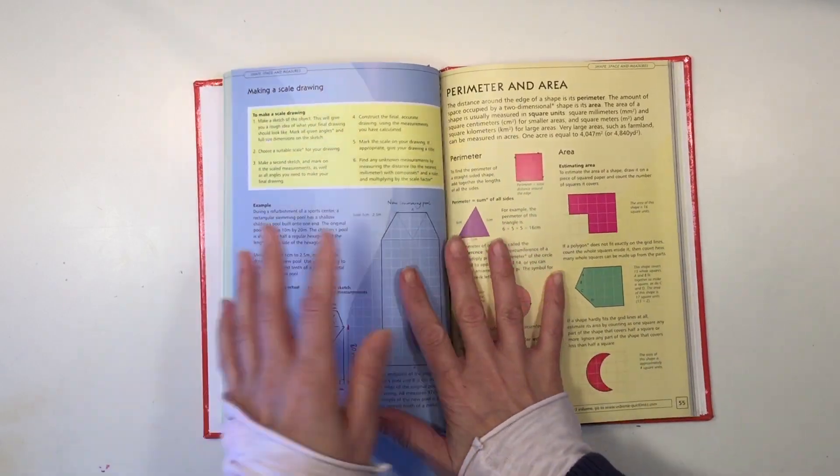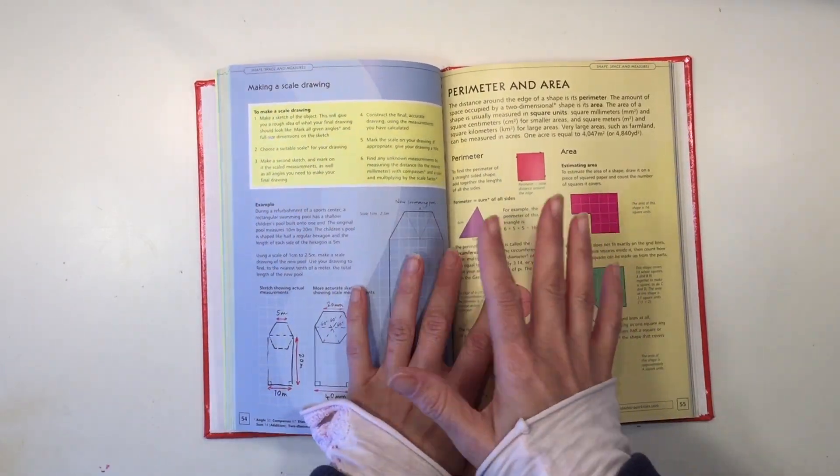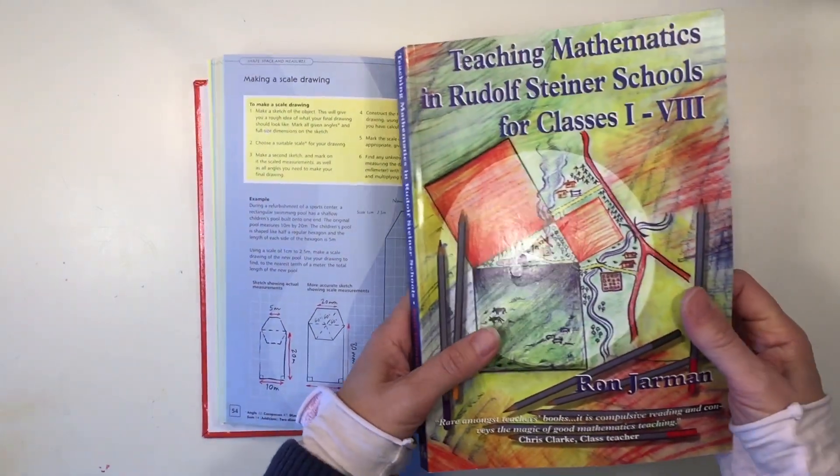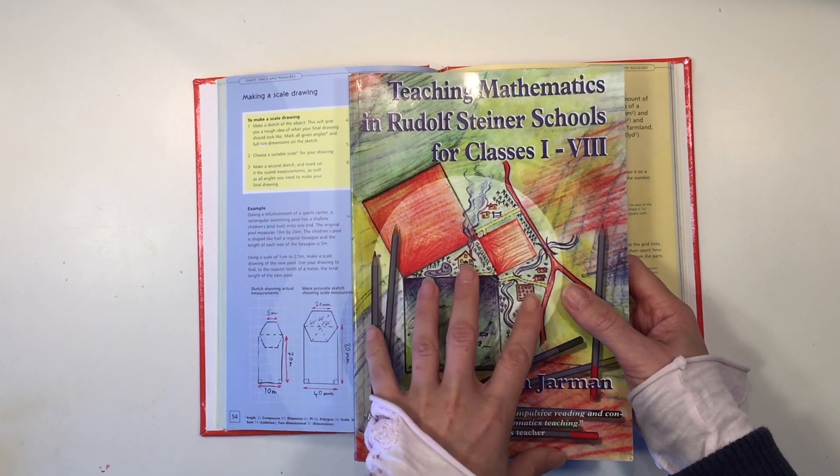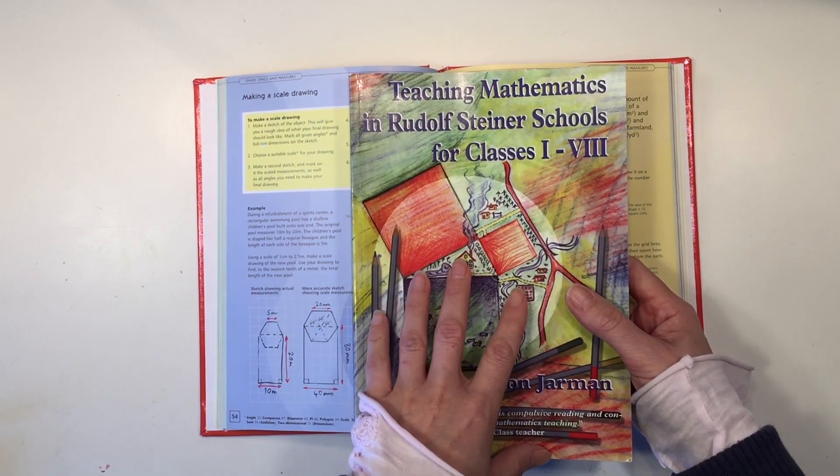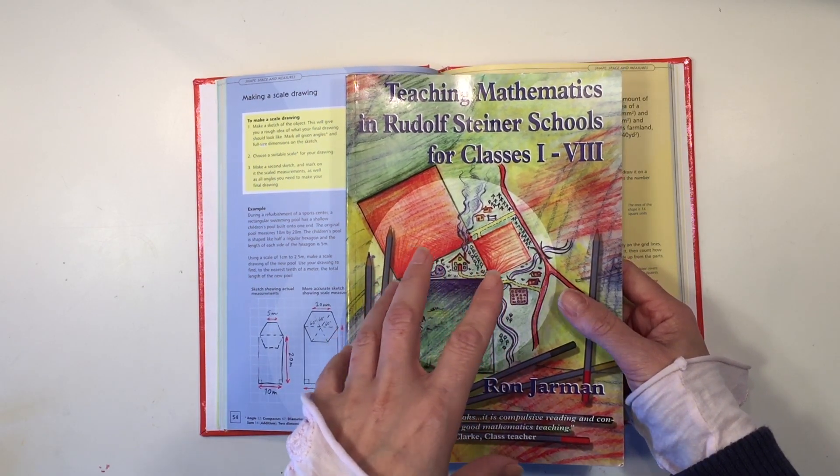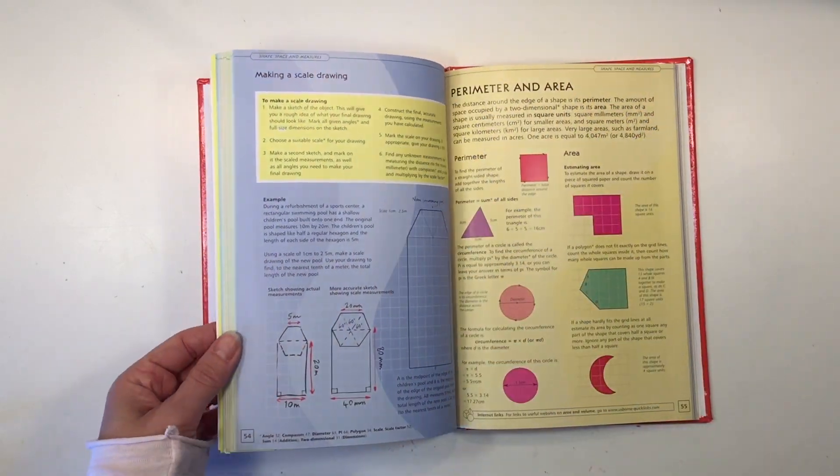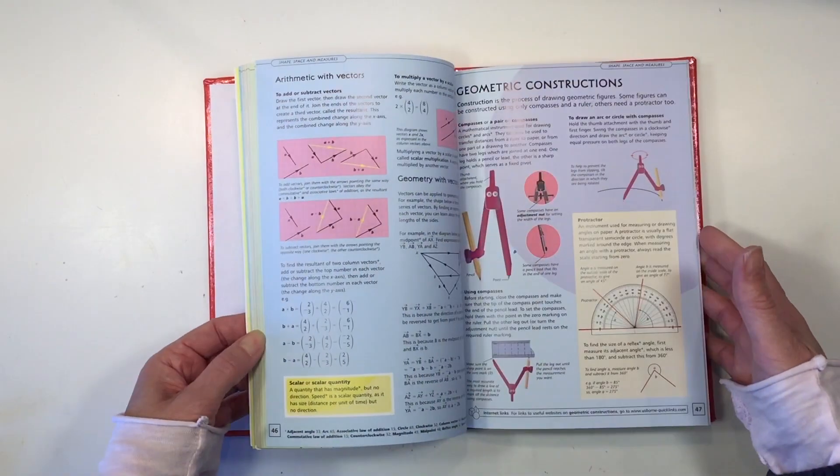Now the main difference between this book versus this book is that this book is geared towards Waldorf education. It goes through the development of the child. It has specific examples that would relate to a Waldorf curriculum, whereas this one has everything to do about math.